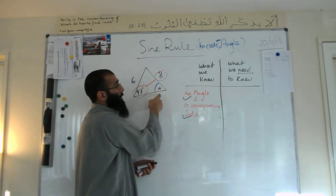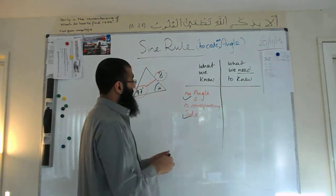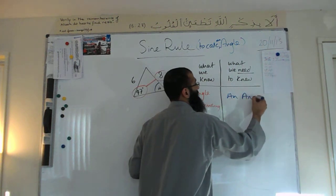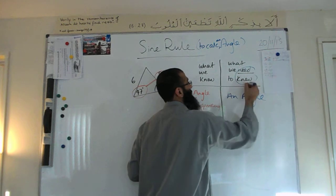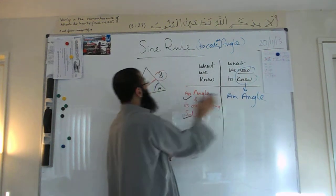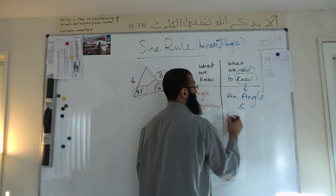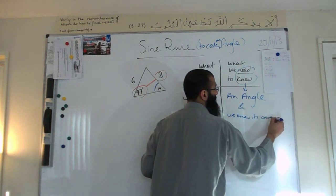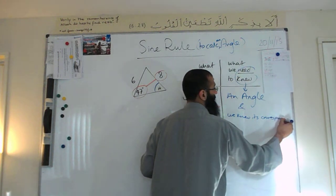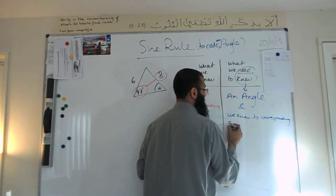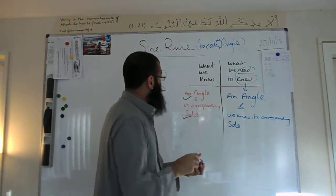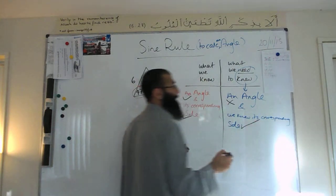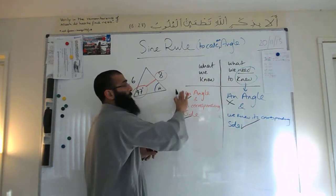Now, we have another angle here — the one we've got to work out. So, under 'what we need to know,' we need to know angle A, which is what we don't know. And we know its corresponding side. So this bit we don't know, and this bit we do know. So we have one complete set of information, and the second set is incomplete by one item.